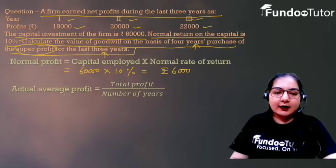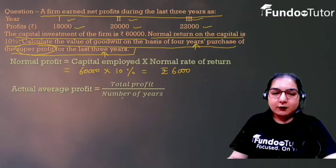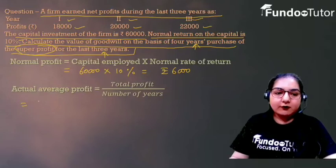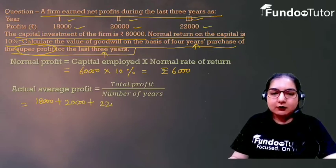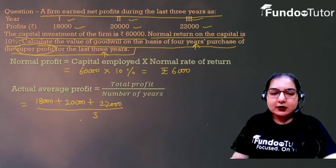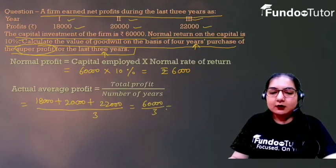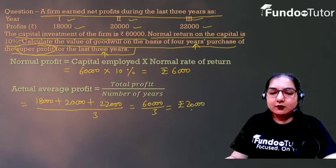First, we calculate the Actual Average Profit, which equals Total Profit divided by Number of Years. Total profit is 18,000 plus 20,000 plus 22,000, divided by 3, which gives us 60,000 divided by 3, equal to Rs. 20,000.